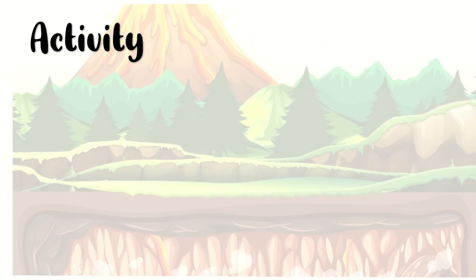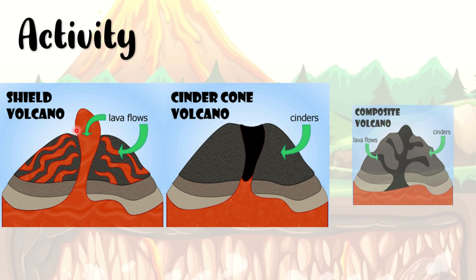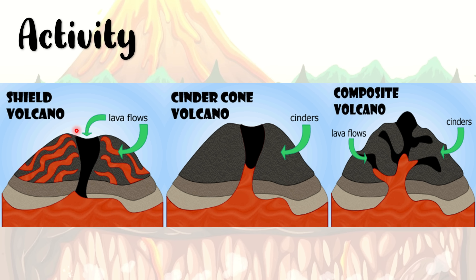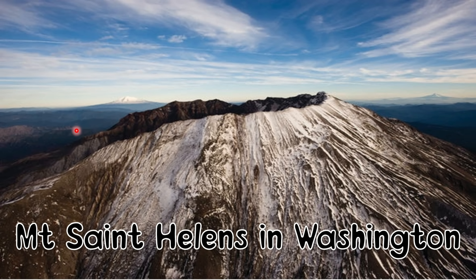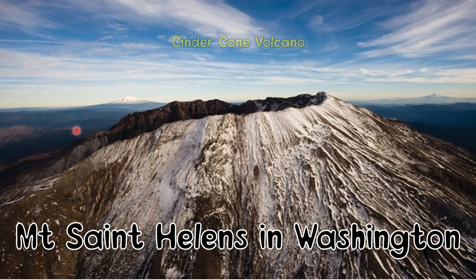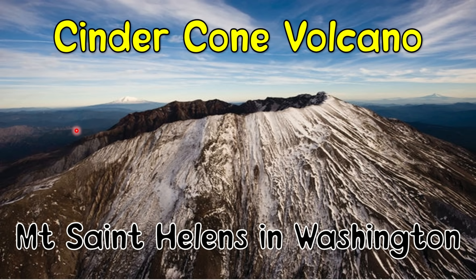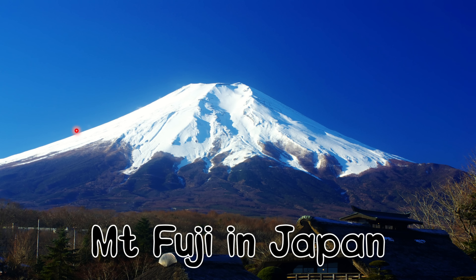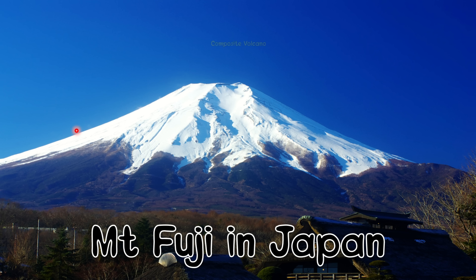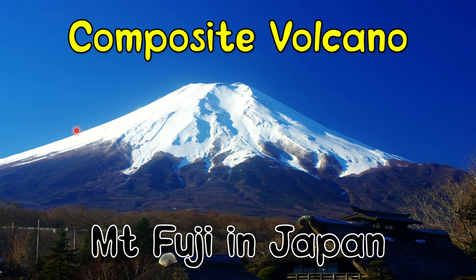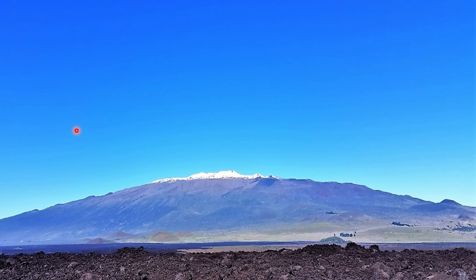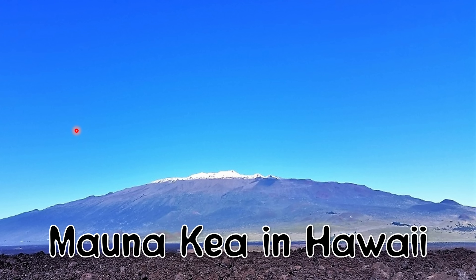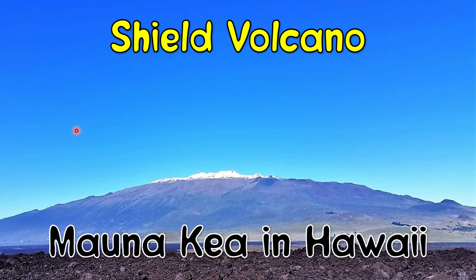Now let us have a short activity. Let us identify the following volcanoes as shield volcano, cinder cone volcano, or composite volcano. Mount St. Helens in the southwestern part of Washington State is an example of cinder cone volcano. The beautiful Mount Fuji in Japan is a composite volcano. Next, Mauna Kea in Hawaii is an example of shield volcano. Good job, class!